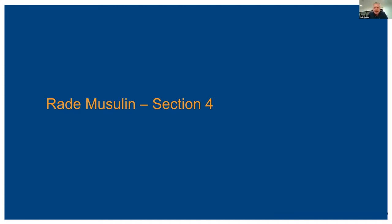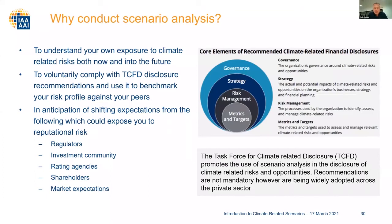One thing I wanted to emphasize is that whenever actuaries use the term risk, we should be thinking about both the downside risk of bad things happening and the upside risk of opportunities — because it is a two-sided distribution. There's a range of outcomes for everything we've talked about, which can benefit a firm or a country or can hurt a country or firm. In the TCFD, they make a significant distinction between risks and opportunities, and I think it's important that actuaries think about risk as both risk and opportunity.